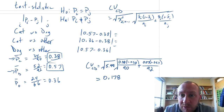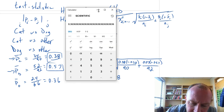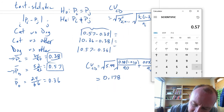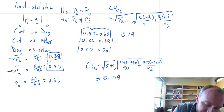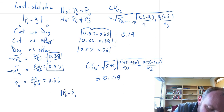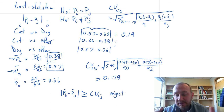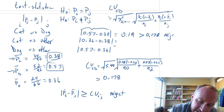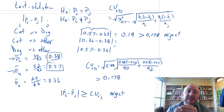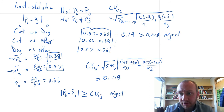With that, we can determine whether there's a difference between the proportion of cat owners and dog owners who would readopt. Our test statistic is |0.57 − 0.38| = 0.19. The rejection rule is: if the point estimate is greater than or equal to the critical value, we reject. Here, 0.19 > 0.178, so we reject. We find a statistically significant difference between the proportion of cat owners and dog owners who would readopt.